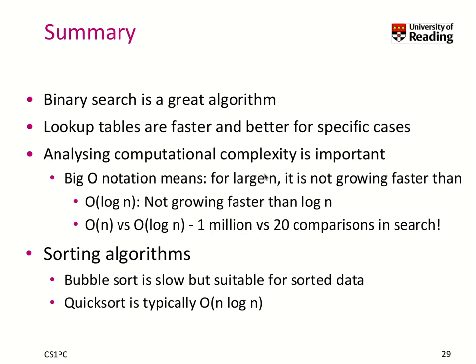Those are really kind of approximative and they are bounds for large n. We saw that log n is really growing much slower than n. So we had 1 million comparisons for n compared to 20 comparisons when you have log n. That's great.